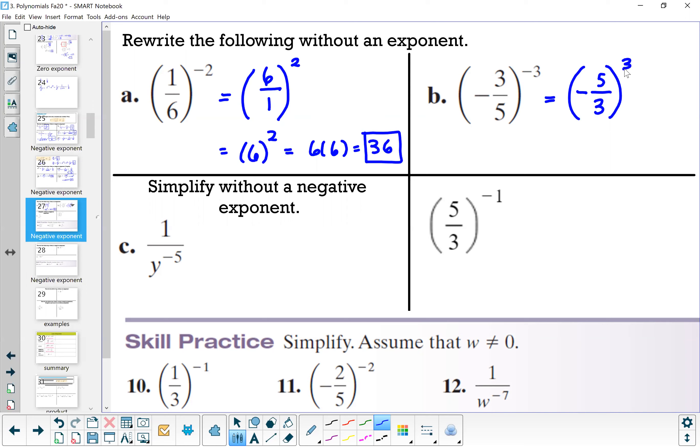All right, so now what this means—I can do this a few ways. I can either say this is (-5/3) times (-5/3) times (-5/3), or we can remember from previous lessons this is like saying (-5) cubed over 3 cubed. So that leaves me with -125 over 27.